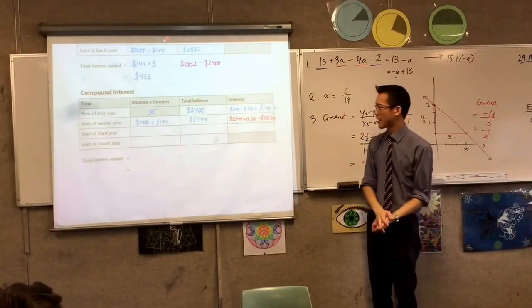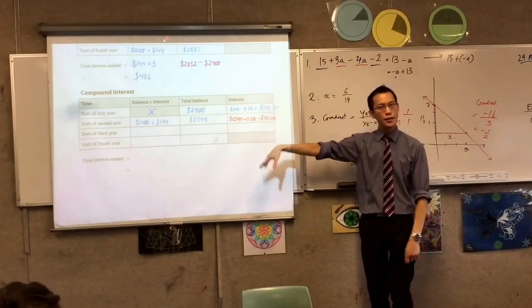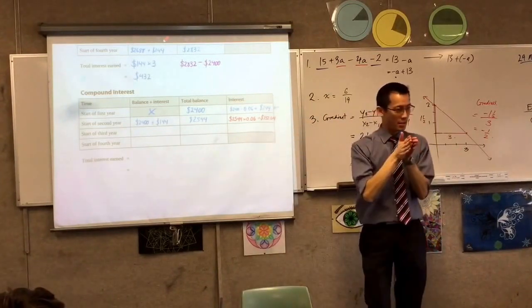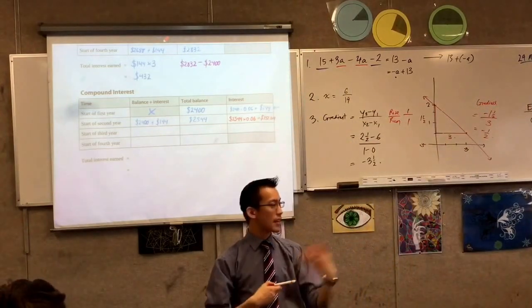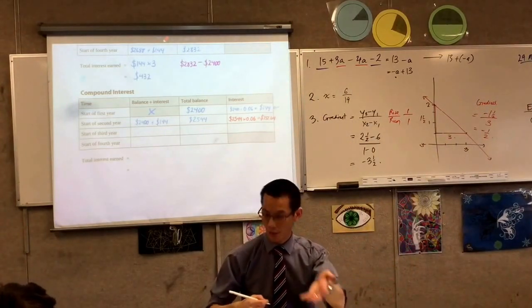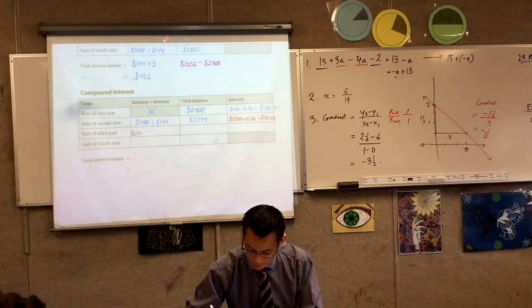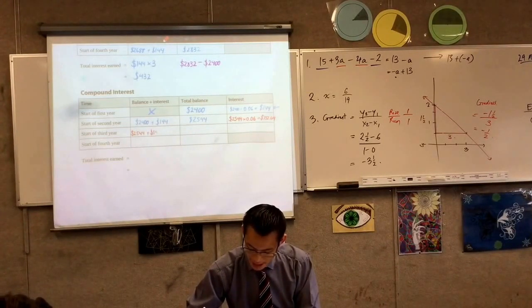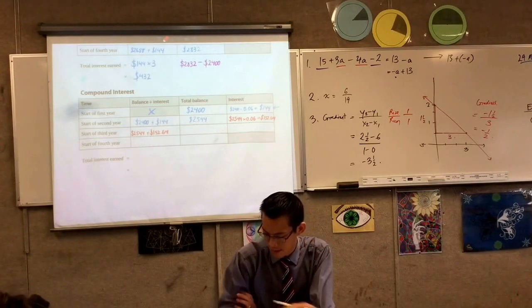That's this compounding idea. From now on, everything is different. Compound interest and simple interest sort of diverge. Because now, at the start of the third year, I'm adding on a different amount. So there's that $2,696.64, and I'm adding on this new, larger interest.